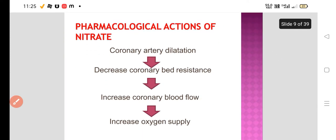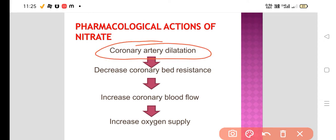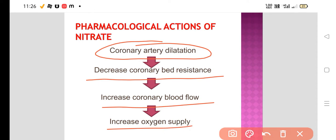What are the pharmacological actions of nitrates? How does it increase oxygen supply? This nitrate causes vasodilatation, so it also causes coronary artery dilatation, resulting in decreased coronary artery bed resistance, and that's why there is increased coronary blood flow and increased oxygen supply to the heart muscle.